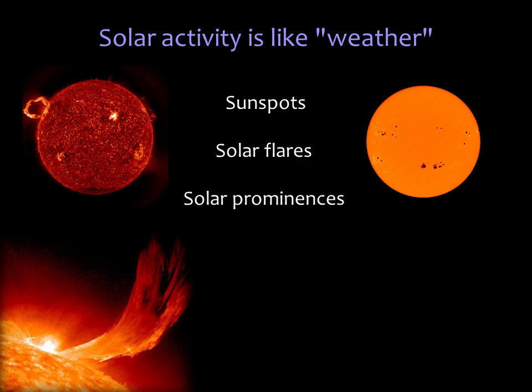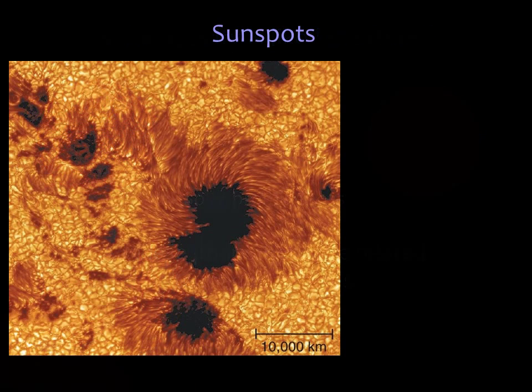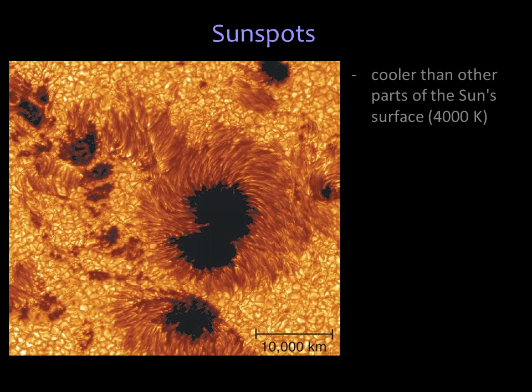All of these phenomena are related to magnetic fields. Sunspots are regions that are about 2,000 Kelvin cooler than the sun's surface. They appear dark relative to the brighter photosphere that surrounds them, but if you could isolate one, it would be blindingly bright.